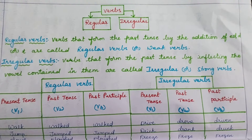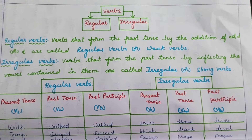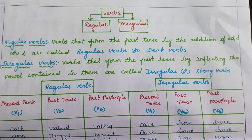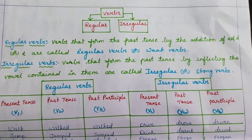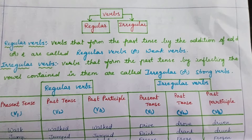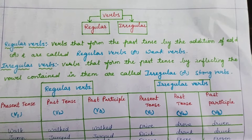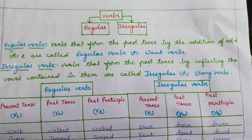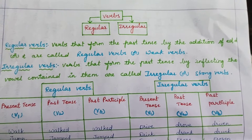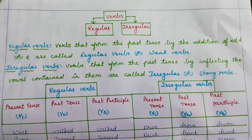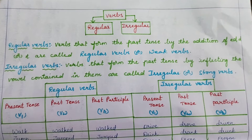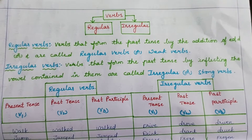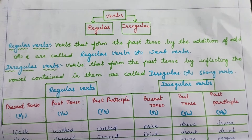Hi, hello! Welcome back to Sri's channel. Today our topic is about two more types of verbs — they are regular and irregular. Before we get started, I request you to please subscribe to my channel and press the bell button. So let's get started.